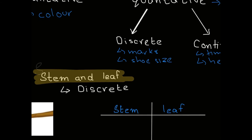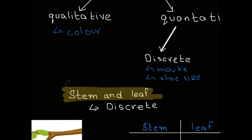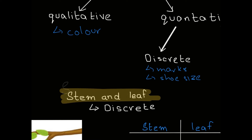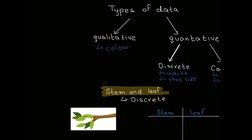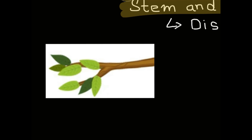A way to represent data is a stem and leaf diagram. A stem and leaf diagram is basically used to represent a small amount of discrete data. Let's look at a picture of a tree to understand the concept.